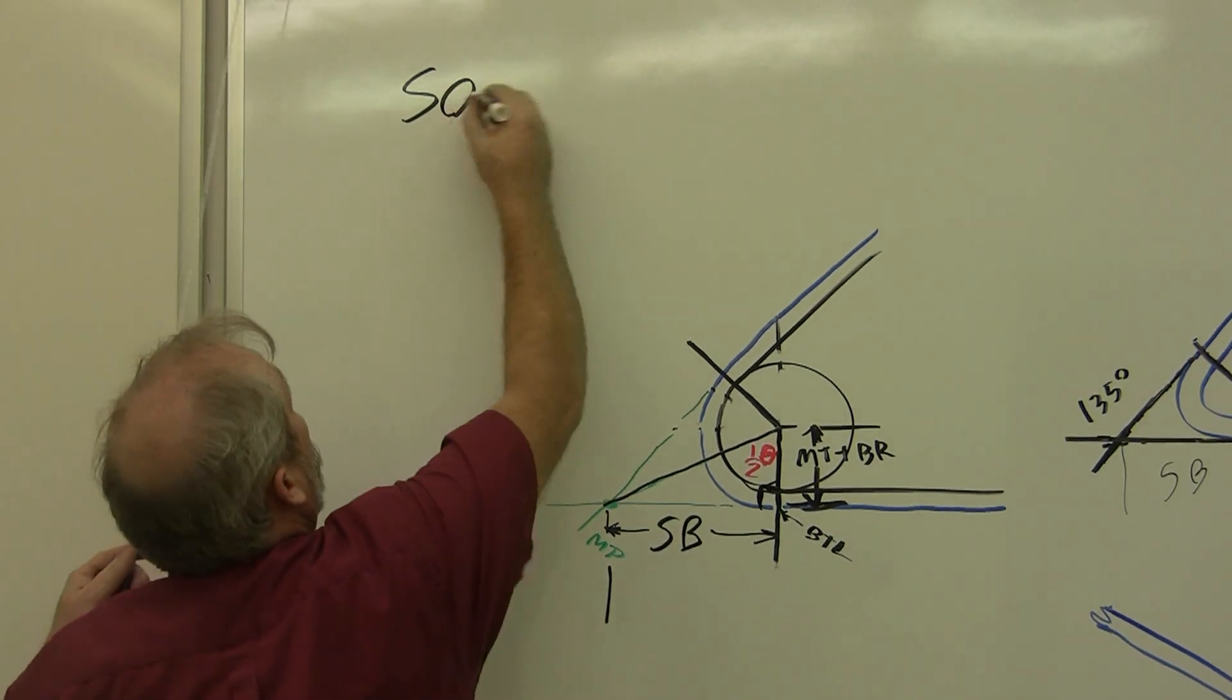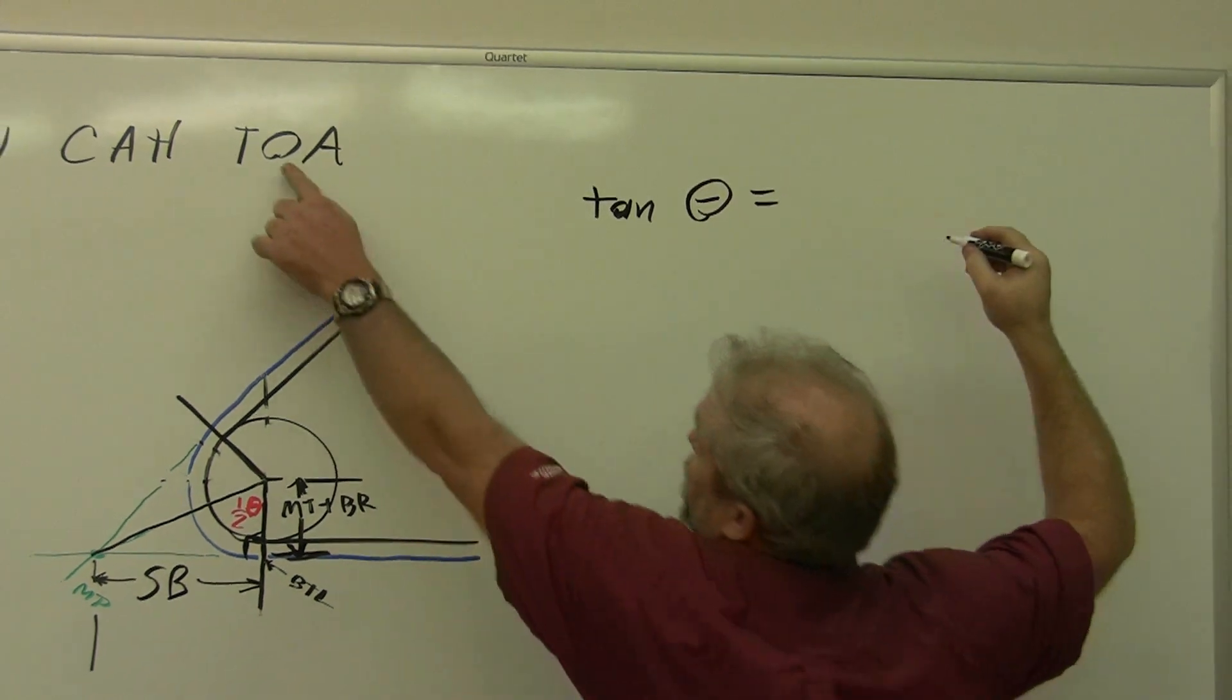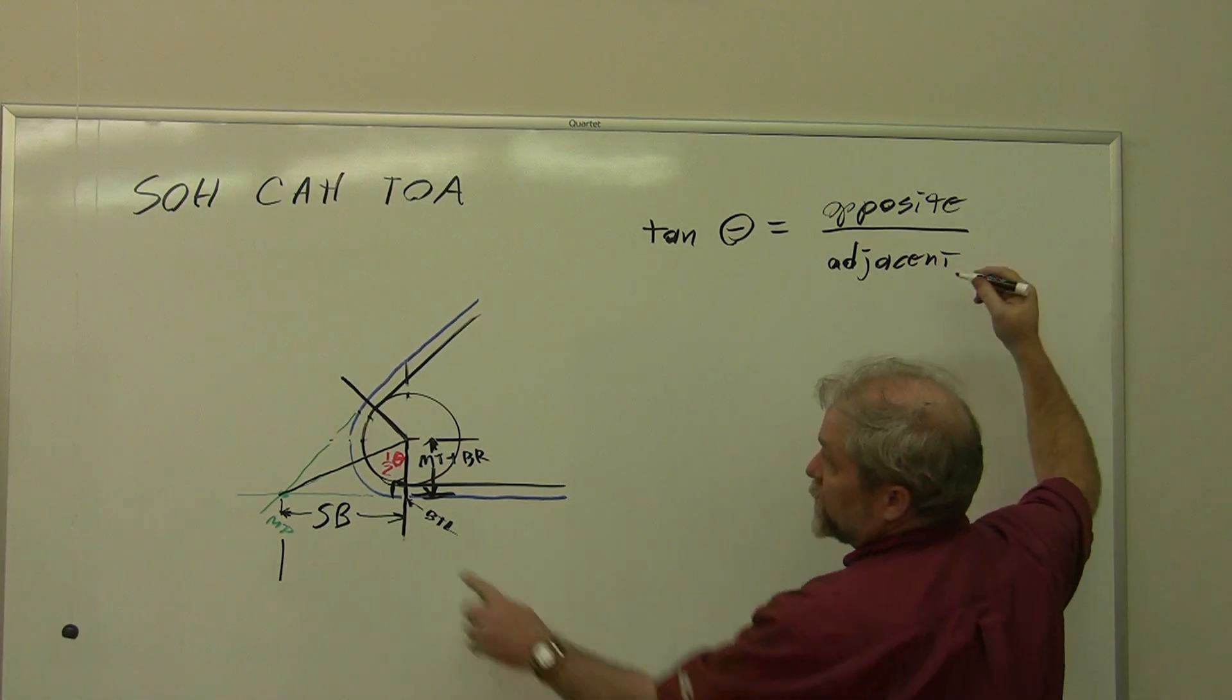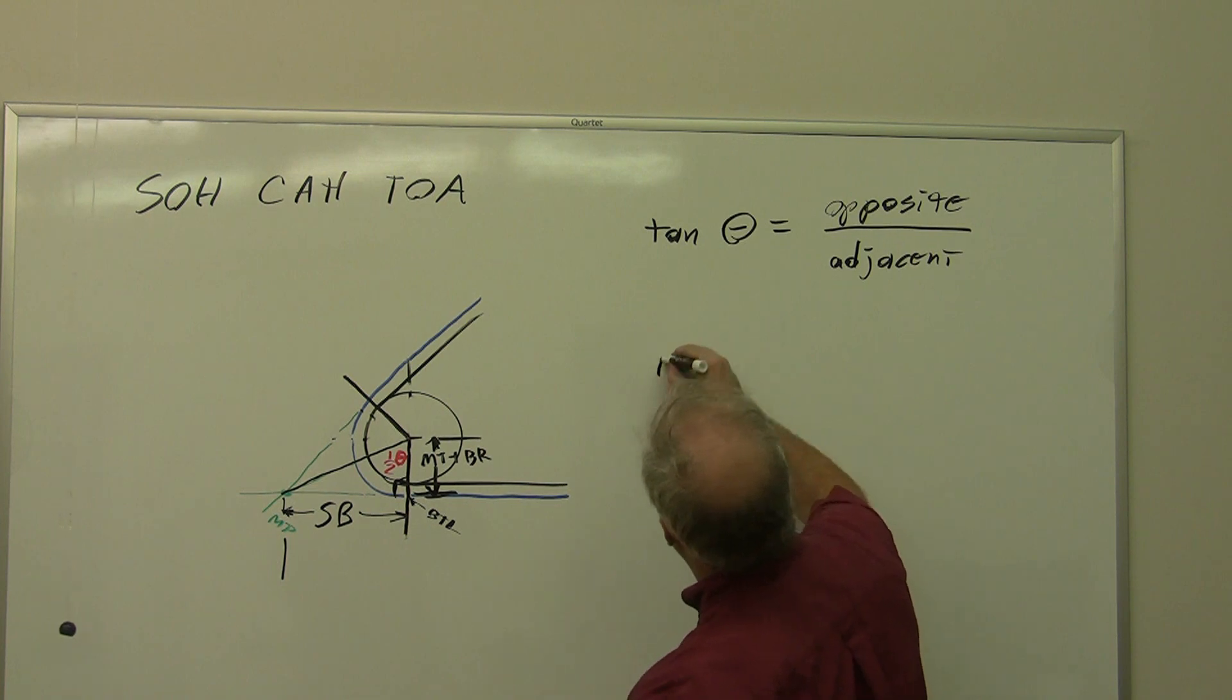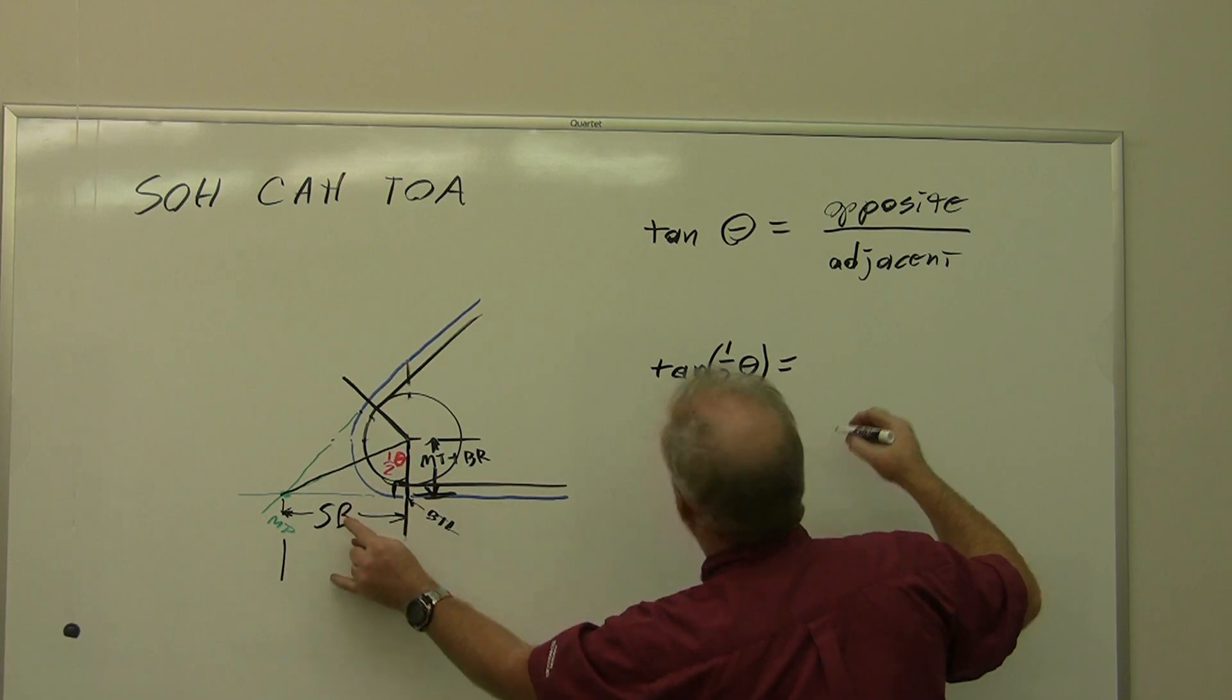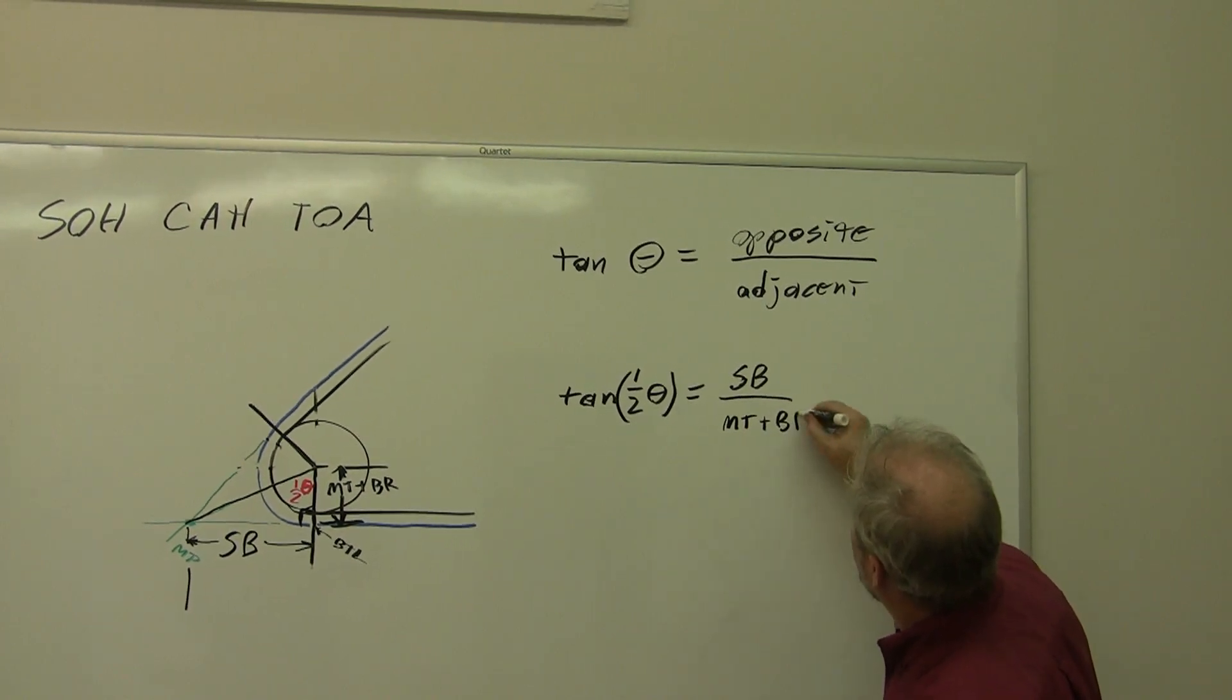Some of us remember the tangent of a particular angle is equal to the opposite over the adjacent, and this holds true for any right triangle. In this case, our angle is a half theta. Substituting, I get tangent of one half of the bend angle, in this case theta, equals our opposite side, that is our setback, over our adjacent side, which is our material thickness plus our bend radius.